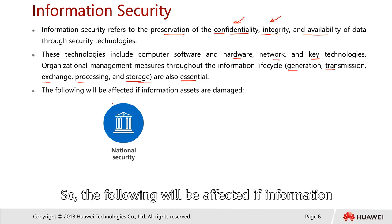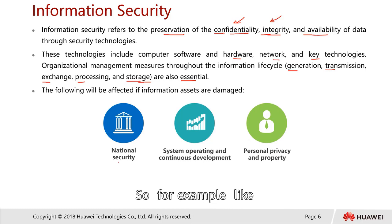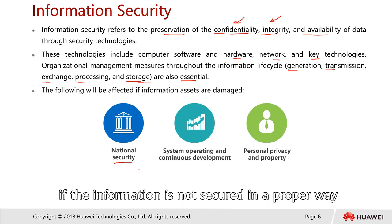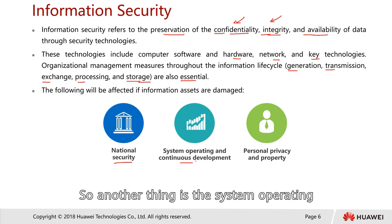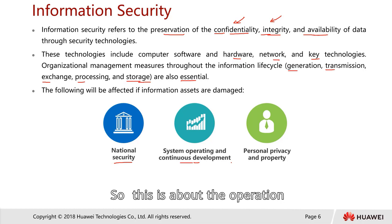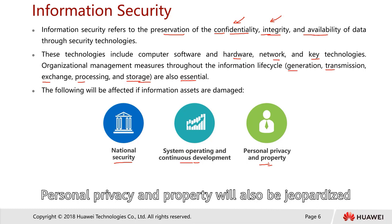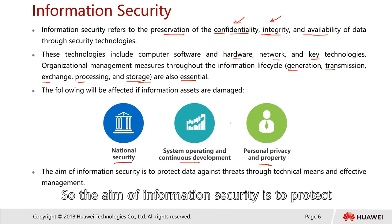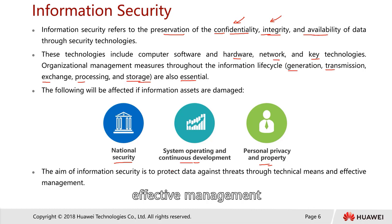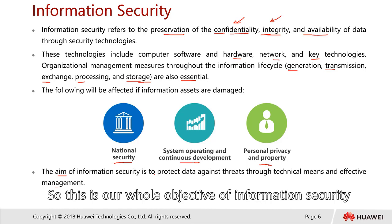If information assets are damaged — for example, if information is not secured properly — it could cause national security issues. System operation and continuous development could also be affected, and personal privacy and property will be jeopardized. The aim of information security is to protect data against threats through technical means and effective management.